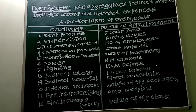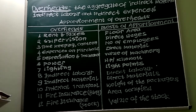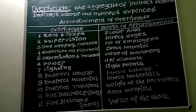Under behaviour, overheads are classified as fixed, variable, and semi-variable. Fixed overheads tend to remain constant irrespective of the level of activity and are not affected by variation in volume of output — for example, rent of building, insurance, salary of office staff. Variable overheads vary directly with volume of output. Semi-variable overheads are partly fixed and partly variable.